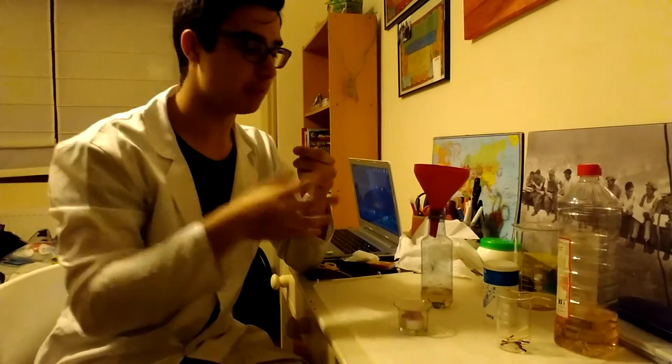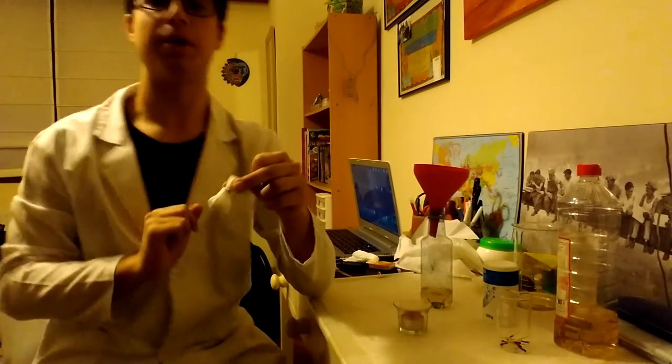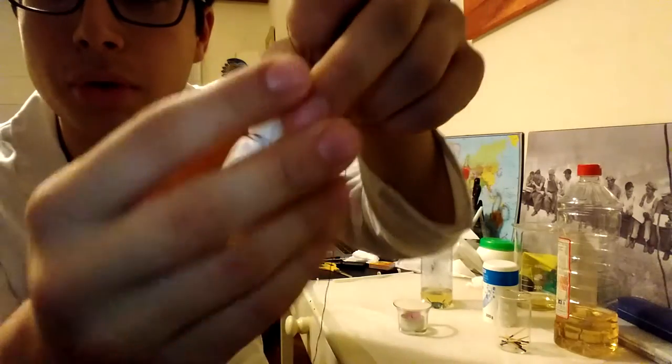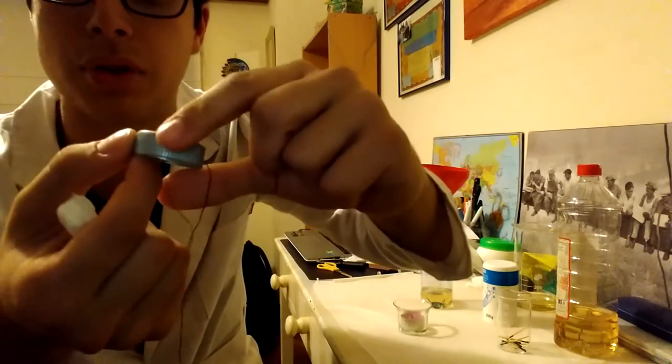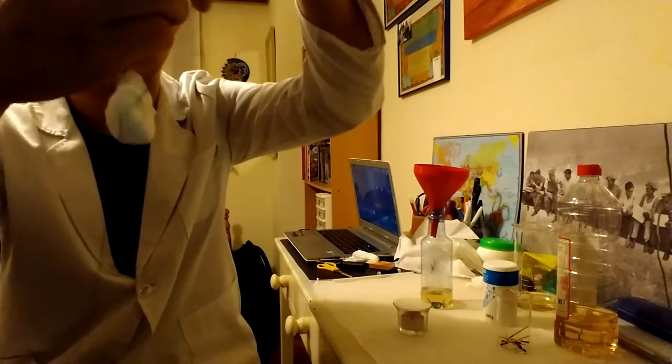Bueno, hola de nuevo. Ya he avanzado una parte para ahorrar tiempo. Lo que hacemos es cogemos el clínex, le echamos el bicarbonato de sodio y lo envolvemos tal que así. Lo atamos con un poco de cuerda. En un tapón de botella hacemos un agujero y lo pasamos tal que así. Y quedaría algo así.